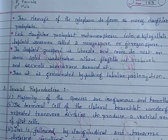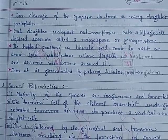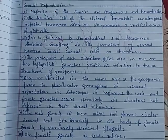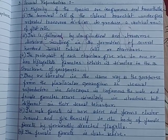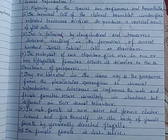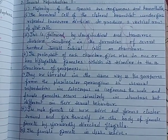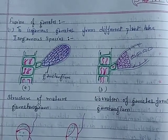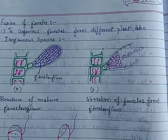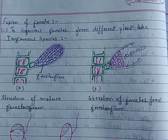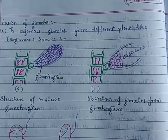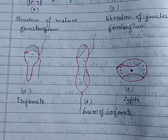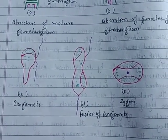Sexual reproduction. Fusion of gametes. Structure of isogametes — including the fusion of isogametes.